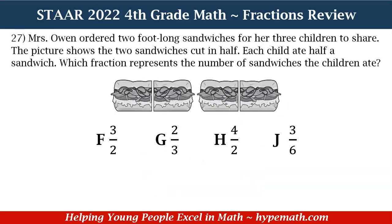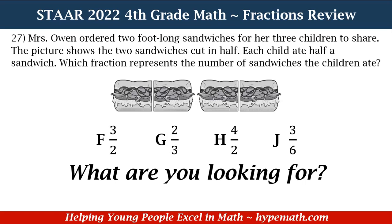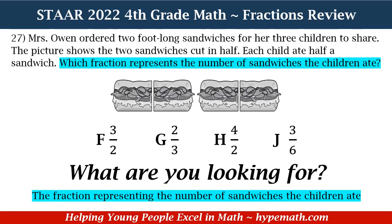Let's dive into question number 27. Ms. Owens ordered two foot-long sandwiches for her three children to share. The picture shows the two sandwiches cut in half. Each child ate half a sandwich. Which fraction represents the number of sandwiches the children ate? Is it F, three halves; G, two thirds; H, four halves; or J, three sixths? In order to solve this problem, the first thing we need to do is ask ourselves what are we looking for. We are looking for the fraction representing the number of sandwiches that the children ate.